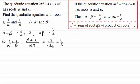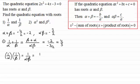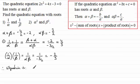Now for the product of the roots, we look at one over alpha multiplied by one over beta, which equals one divided by alpha beta. We know alpha beta is minus 3 over 2, so one divided by minus 3 over 2 gives us minus 2 thirds. We can now write the equation as x squared minus the sum of the roots times x, so minus 4 thirds x, plus the product of the roots which is minus 2 thirds, equals zero.